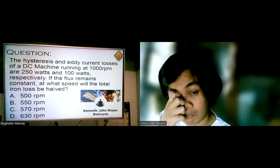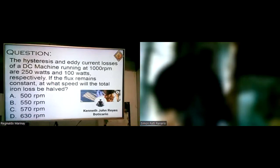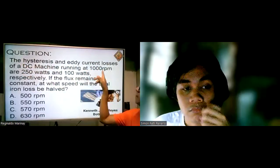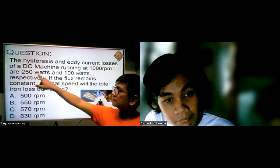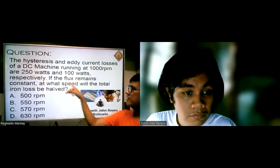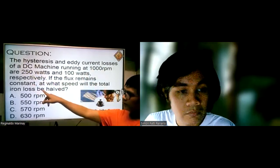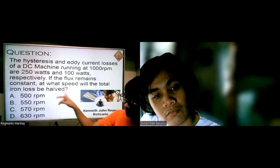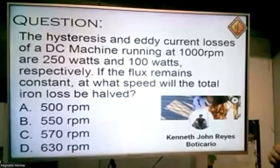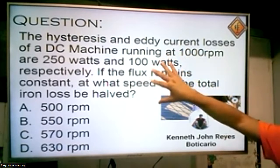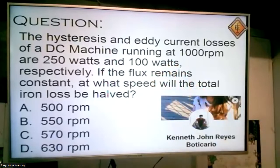Okay Kenneth, let us read the problem. The hysteresis and eddy current losses of a DC machine running at 1000 rpm are 250 watts and 100 watts respectively. If the flux remains constant, at what speed will the total iron loss be half? This is a past REE board problem, that's why I chose this question to answer.